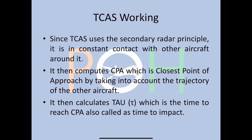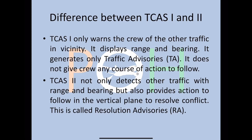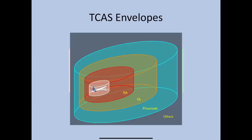Based on tau, the aircraft is able to decide the envelope. Now what is the major difference between TCAS 1 and TCAS 2? TCAS 1 displays range and bearing on the screen but generates only alerts — it does not give the crew any course of action to follow. TCAS 2, on the other hand, not only gives range and bearing but also provides an action to follow in the vertical plane to resolve conflict. This is called a Resolution Advisory.